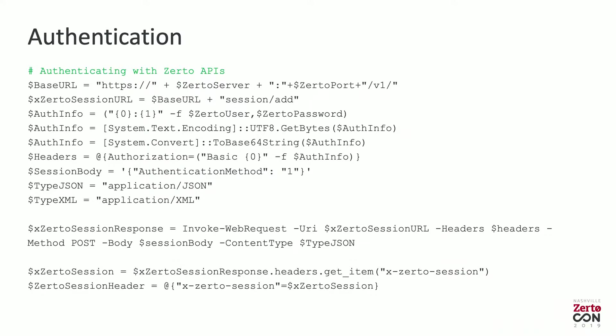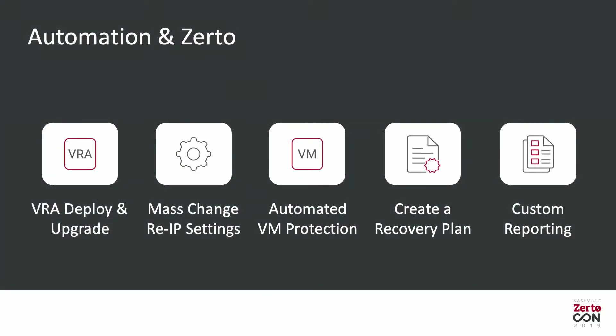For authentication, I'm not going to walk through the entire code letter by letter, but this is basically how you do it. It's gotten a little easier with PowerShell Core — you take your username and password, encode it, send it to the API, get a session back, and use that session in every other API call you do.